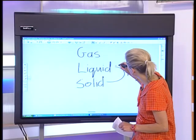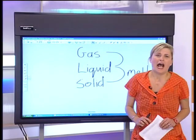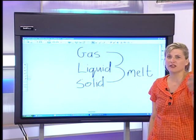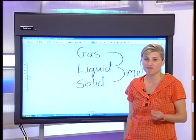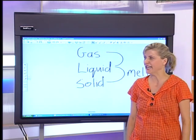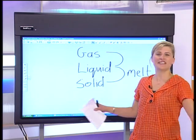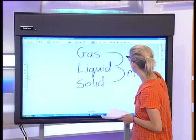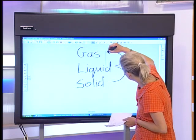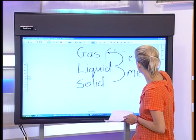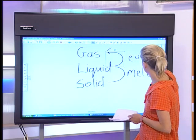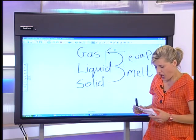To go from liquid to gas — if you take a bottle of nail polish remover and leave it open for a day, by the end of the day it's virtually empty. It has evaporated! So the process of going from liquid to gas is called evaporation.